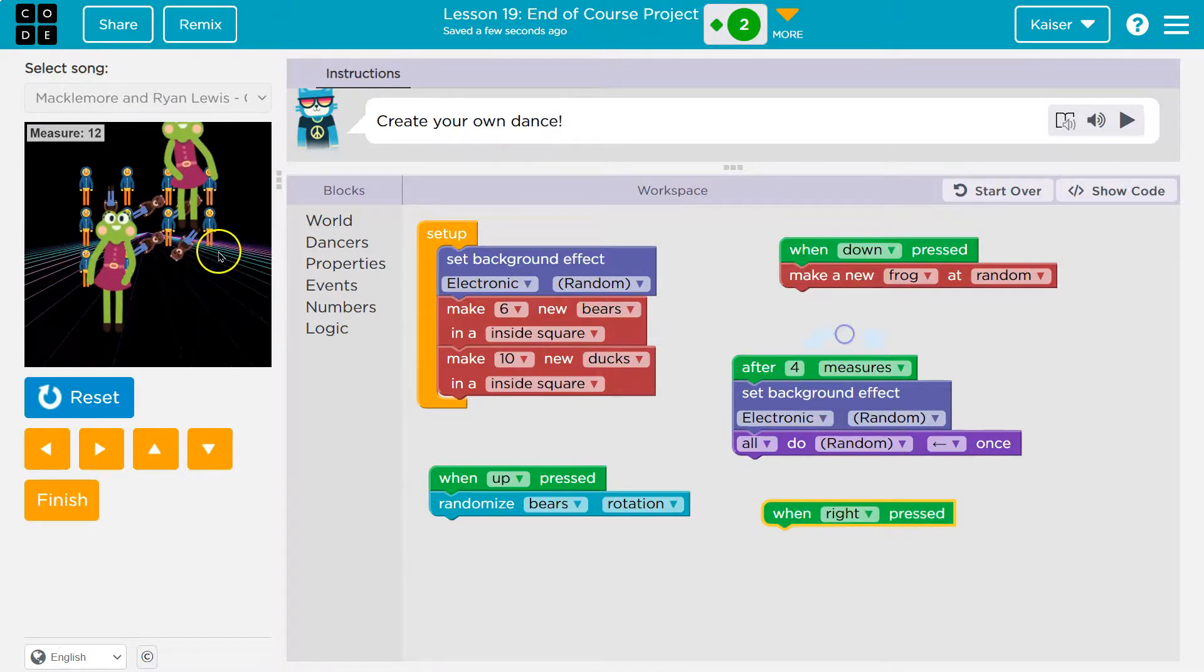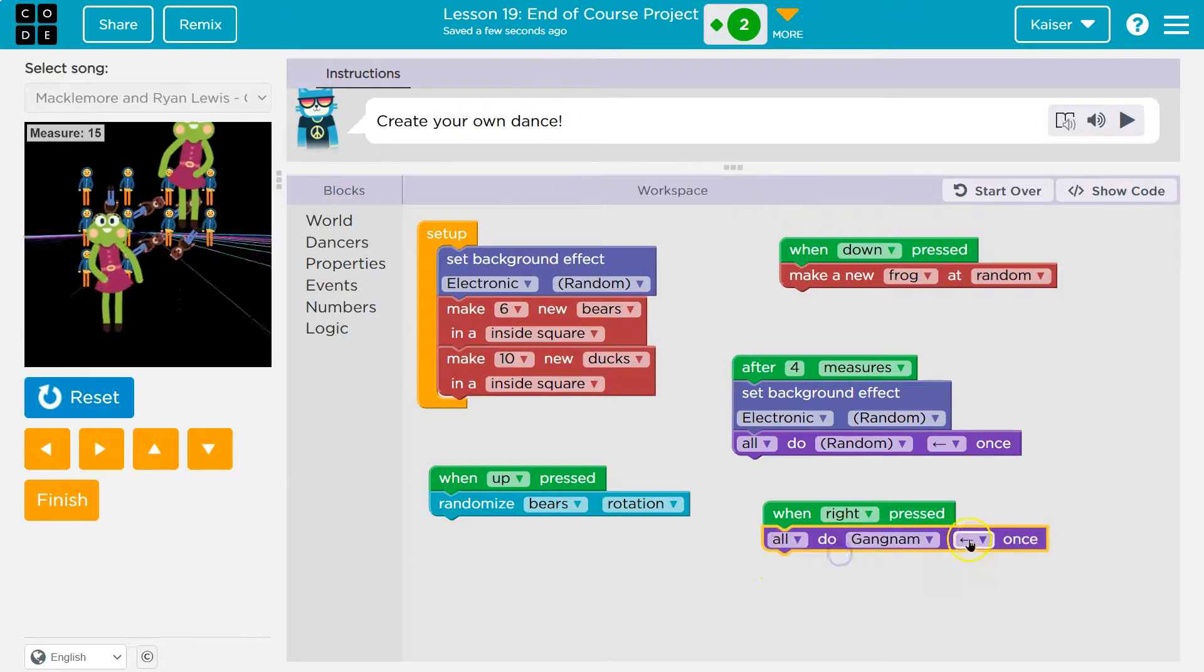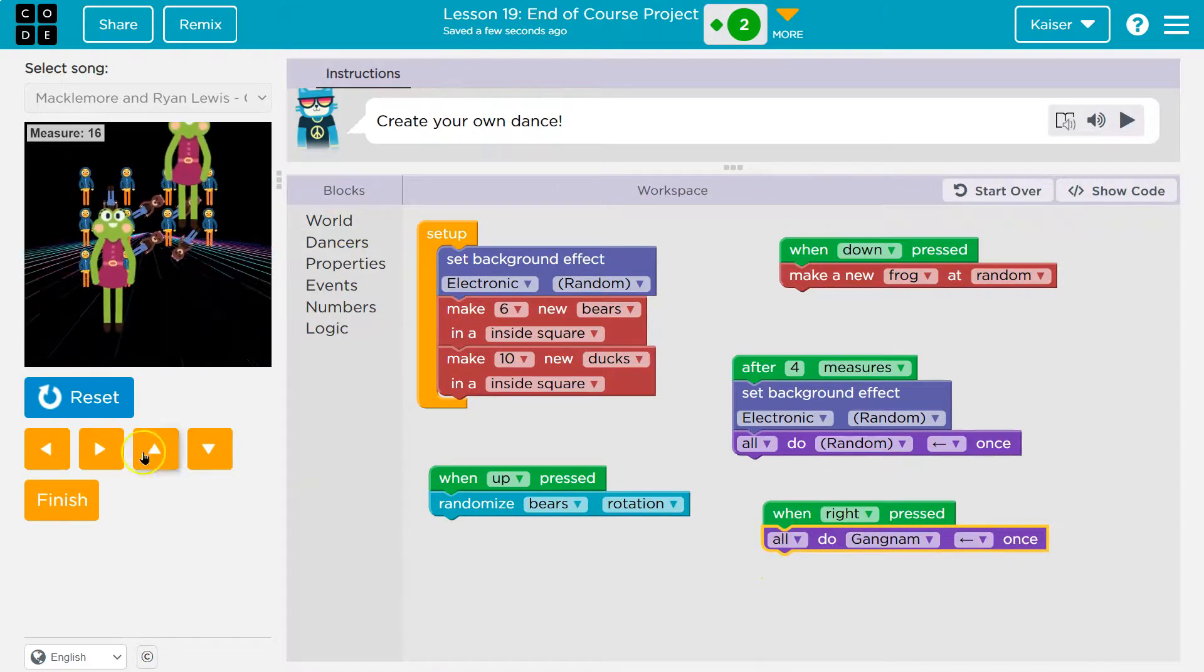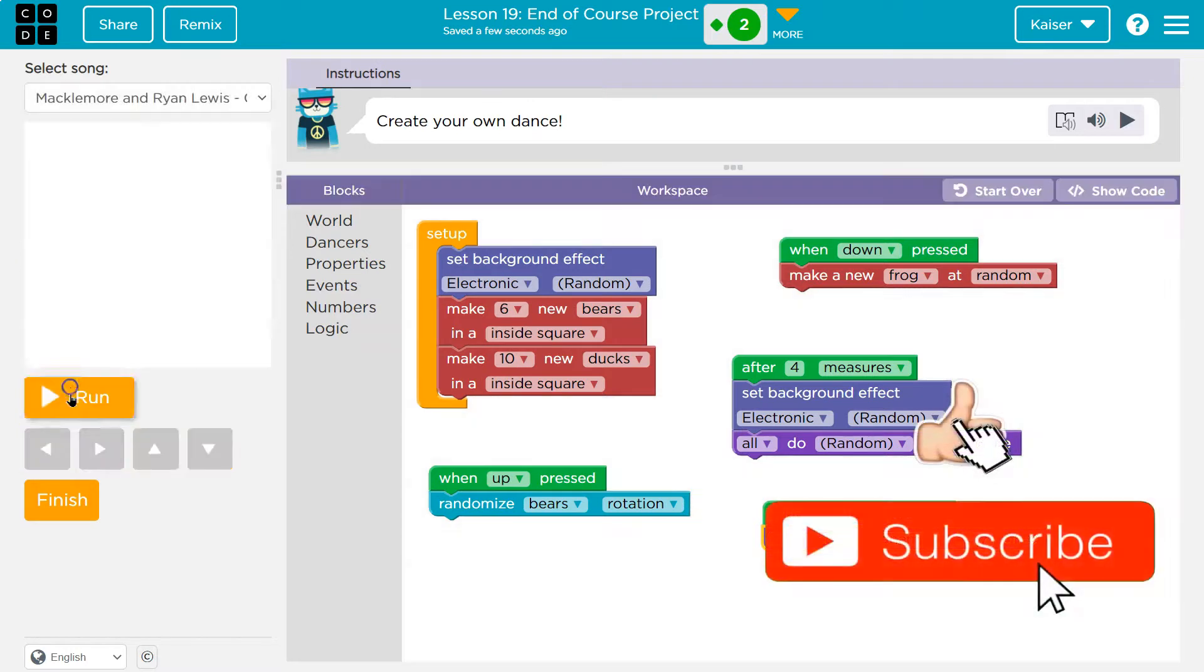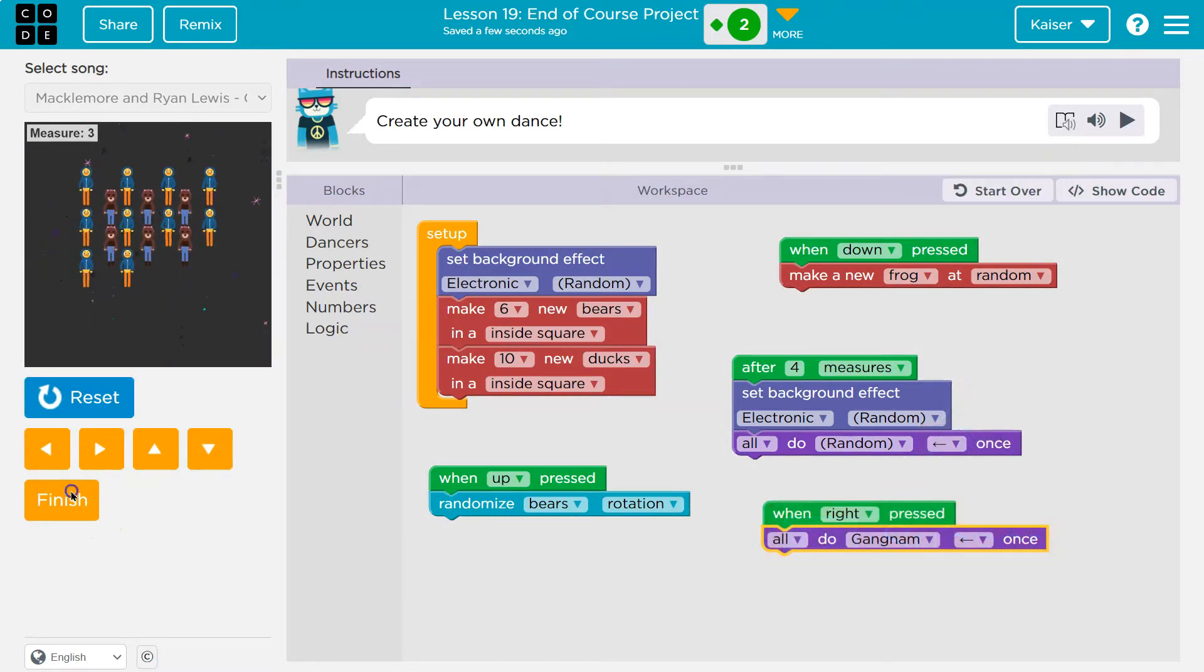Maybe when I go to the right, I make all my dancers, all dancers, do that once, right? And I can keep going, really making this my own. Pretty cool. Onward.